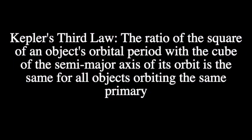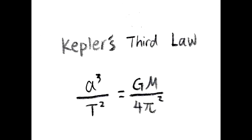The third law states that the ratio of the square of an object's orbital period with the cube of the semi-major axis of its orbit is the same for all objects orbiting the same primary, which is what Newton later used to derive his law of universal gravitation.